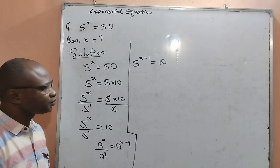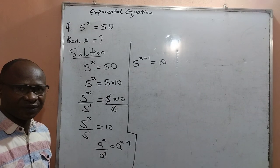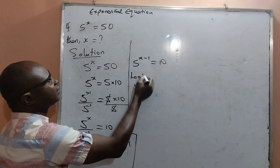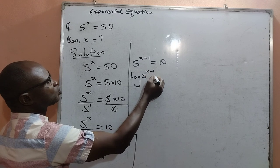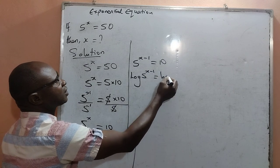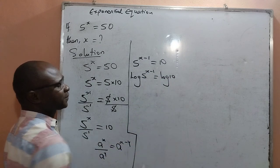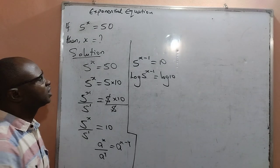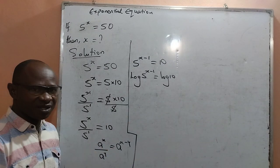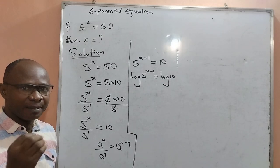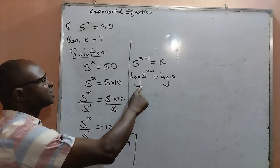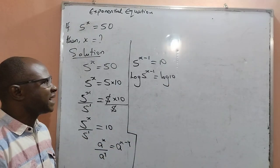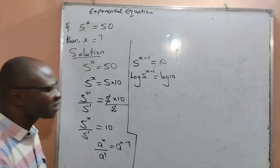Now, moving forward, I will log both sides of the equation. That means the log of 5 raised to the power x minus 1 will be equal to the log of 10. But when the log appears like this, it assumes a natural base. What it means is that here is to base 10, and this is also base 10.